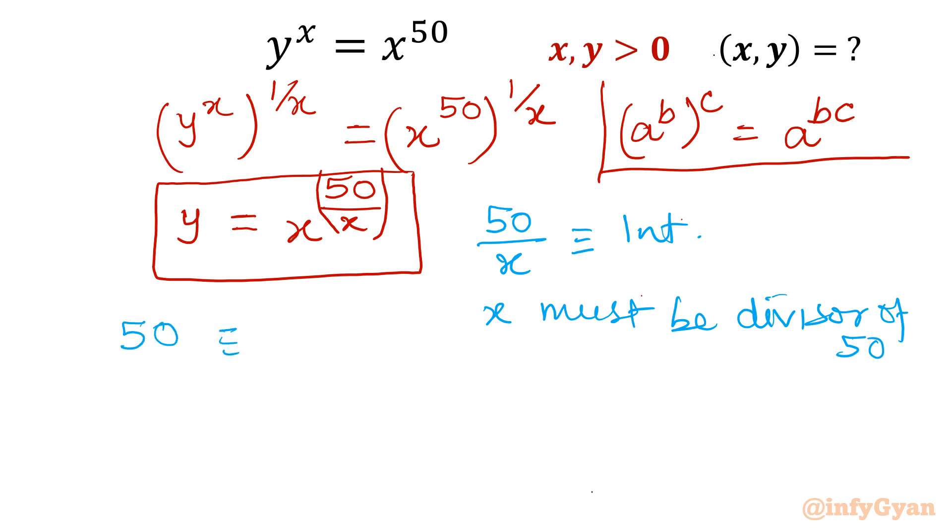So we will get 1, 2, 5, 10, 25, and last 50. There are six factors. If I put x equal to 1, 2, 5, 10, 25, 50, then our exponent will come out integer. Once exponent is integer, y value will be integer because x is integer. So integer raised to power integer, you will get integer.